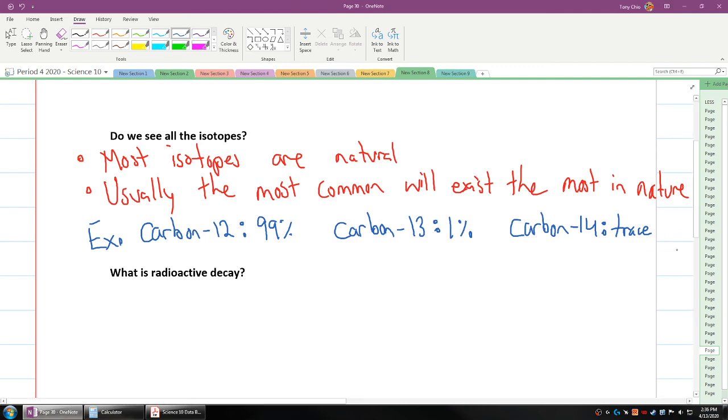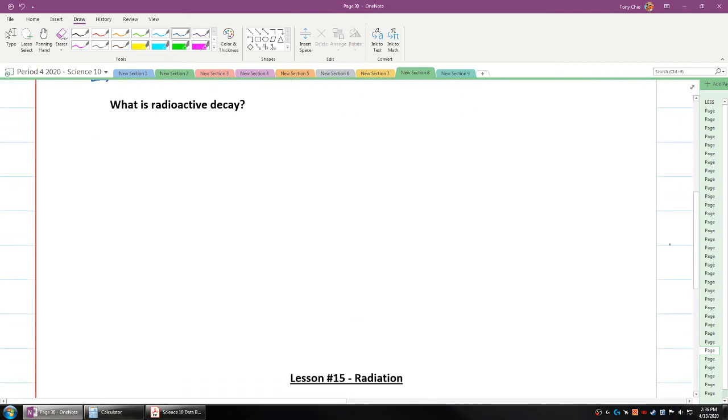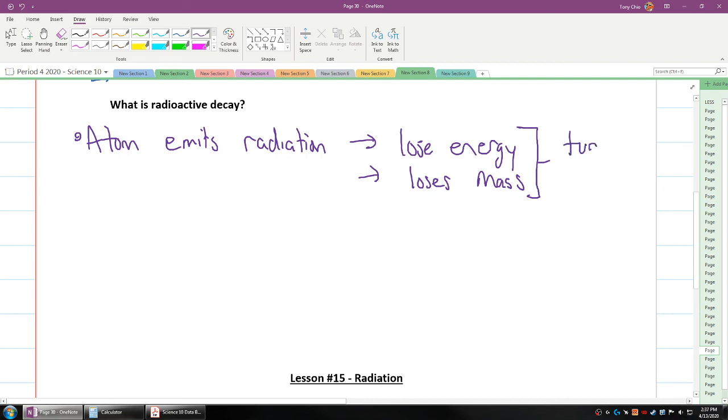So what is the last thing we're talking about today? What is radioactive decay? Well, radioactive decay is when an atom emits radiation. Well, when it does this, it loses energy. It loses energy. But it also loses mass. And because it loses mass, this usually leads to it turning into, turns into a different element.